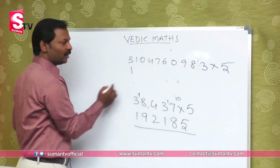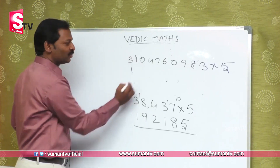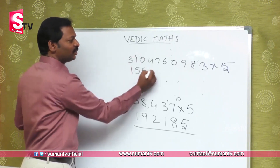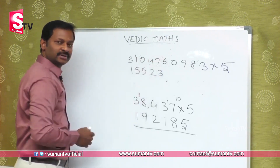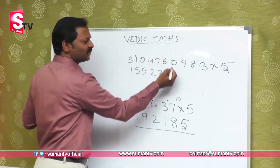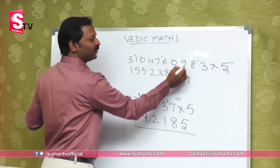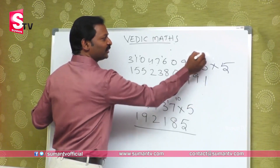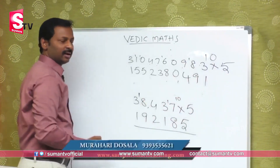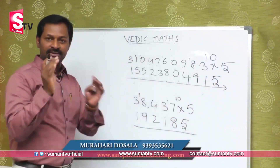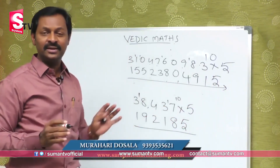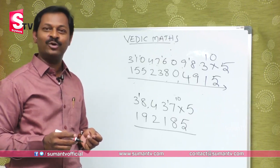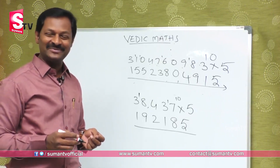2 ones are 2. 2 fives are 10. On 10, carry 1. Again 2 fives are 10. 2 twos are 4. 2 threes are 6. 2 eights are 16. 2 zeros are 0. 2 fours are 8. 2 nines are 18. 2 ones are 2. So, 5 times — how do you do it? If you say slow, you will do it in 3 seconds. Maximum 3 to 5 seconds. I hope you got the confidence levels in doing mathematics. Thank you.